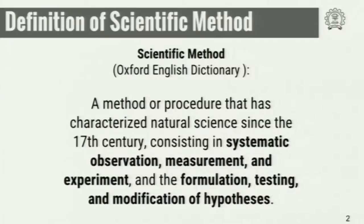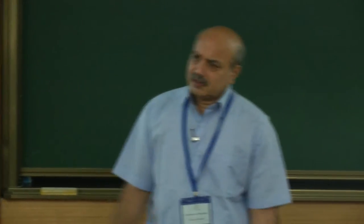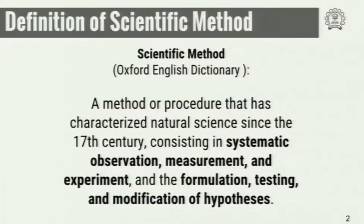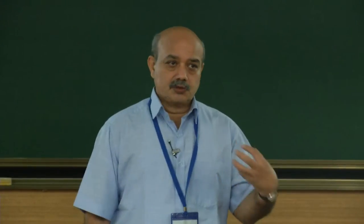The second most important part of the scientific method is formulation, testing and modification of a hypothesis. The methods that existed probably before that had the first part — formulation, testing — but this part, modification of a hypothesis, a continued modification of a hypothesis which keeps developing into theories, is probably one of the most crucial, one of the most important parts of the scientific method.